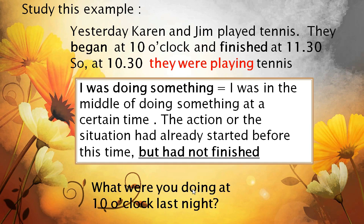Study this example to understand the past continuous more. Yesterday, Karen and Jim played tennis. They began at 10 o'clock and finished at 11:30. So at 10:30, they were playing tennis. The time between 10 and 11:30 — 'I was doing something' means I was in the middle of doing something at a certain time. The action or situation had already started before this time but had not finished.